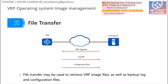First, we should know the operating system is just a file. Windows is an operating system with a bundle of many files — hundreds of files. But the VRP is simple, just one file. It's a package. So when we want to upgrade the version in the router, we just download a VRP image package into the device.